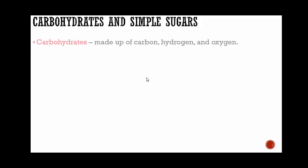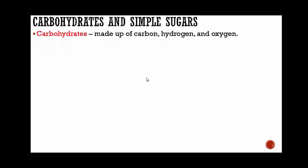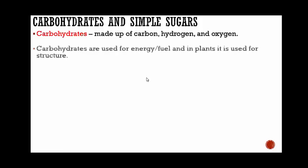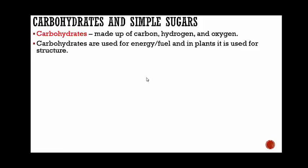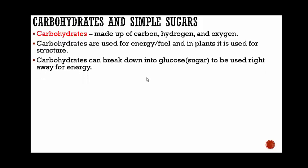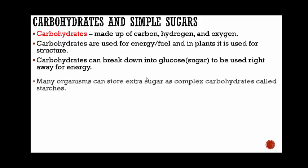Carbohydrates and simple sugars. Carbohydrates are made up of carbon, hydrogen, and oxygen — if it has those three elements, it is a carbohydrate. Carbohydrates are used for energy; they're fuel for the body, and in plants they're used for structure. Carbohydrates can break down into glucose, which is sugar, to be used right away for energy.